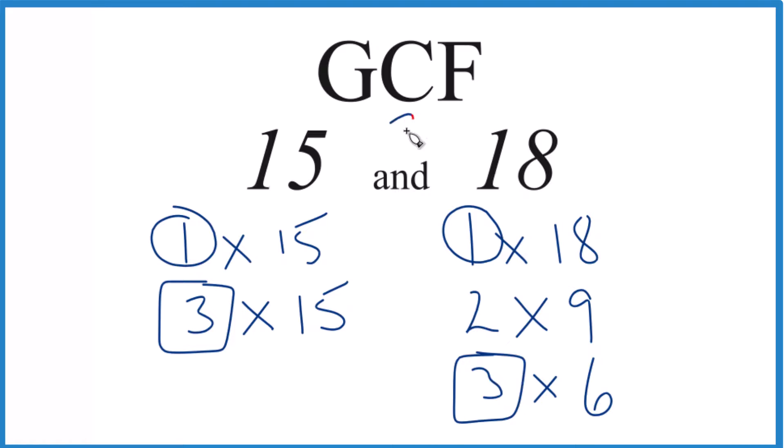That makes 3 the greatest common factor, the GCF, for 15 and 18. There are other ways you could do this, like prime factorization, and you get the same answer, but it's probably easier to do this way unless you have a really big number. This is Dr. B. Thanks for watching.